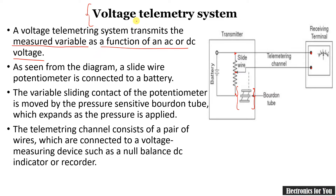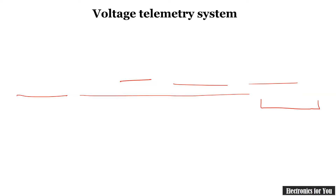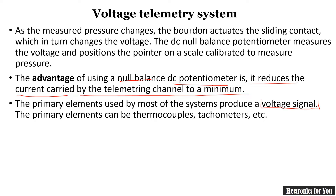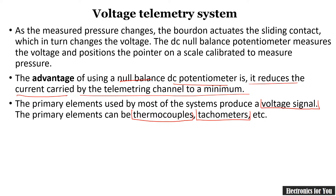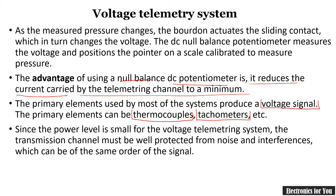If we want to measure some different variable, such as temperature, we can use a thermocouple. Or if we are measuring speed, we can measure it with the help of a tachometer, which will convert the measured variable to a voltage signal.